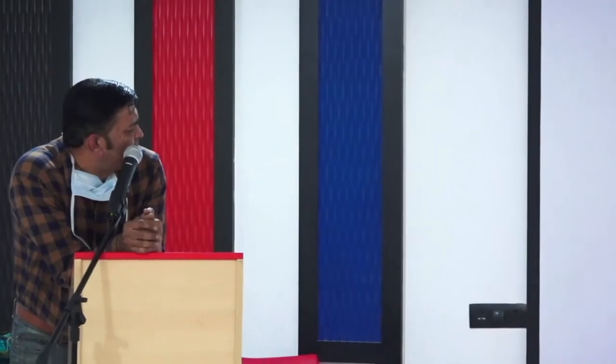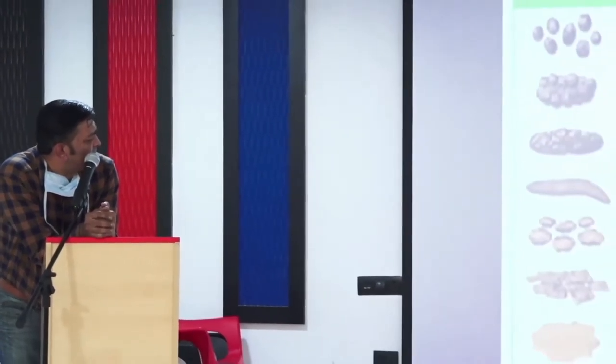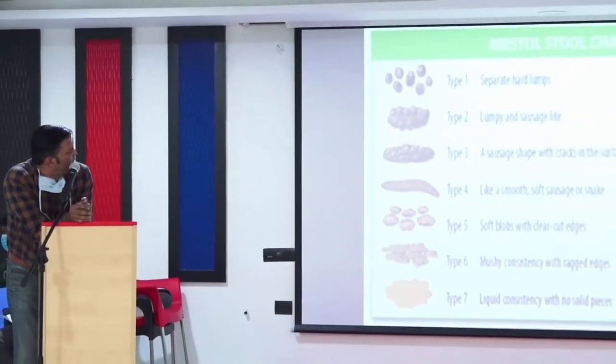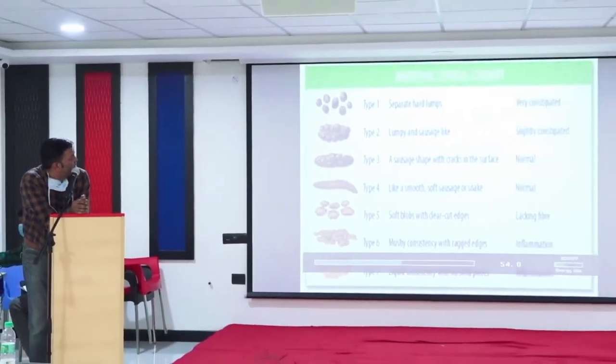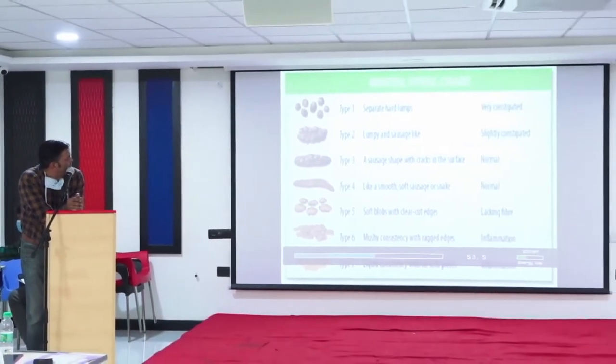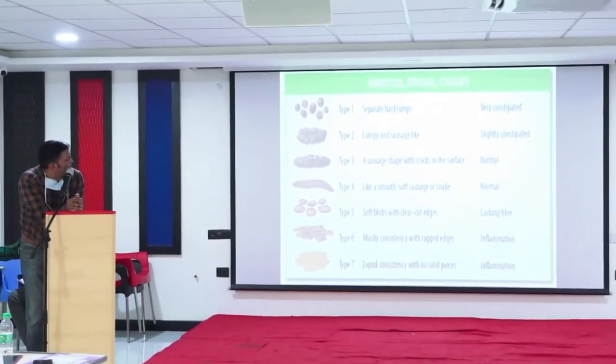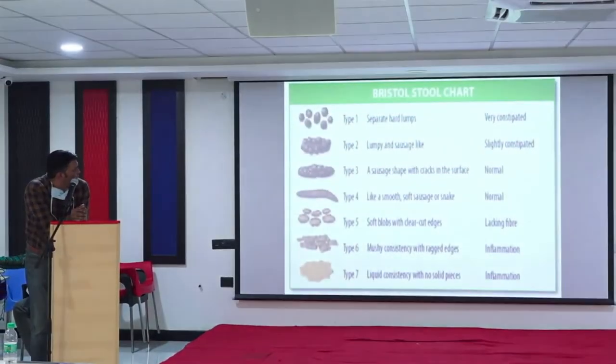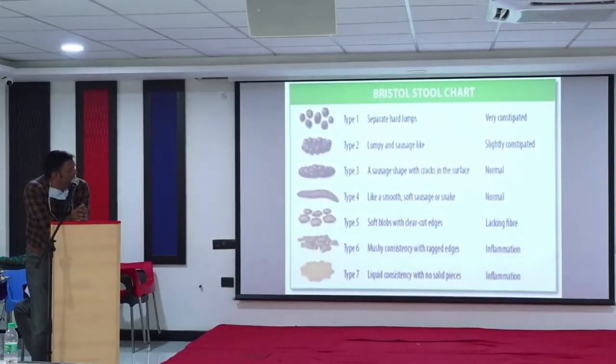On the Bristol stool chart, type 1 and type 2 are constipated stools. Type 1 - just like goat poo or rabbit poo - is not good at all. Type 2 - lumpy and sausage-like, like a corn on a cob - is also not very good. The other types are normal stools, and the last few are liquid stools.